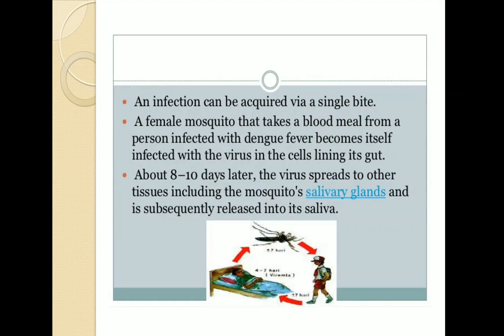Dengue virus infection can be acquired via a single bite. A female mosquito that takes a blood meal from a person infected with dengue fever becomes itself infected with the virus in the cells lining the gut. About 8 to 10 days later, the virus spreads to other tissues including the mosquito's salivary gland and is subsequently released into the saliva.